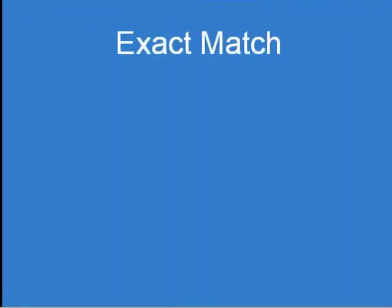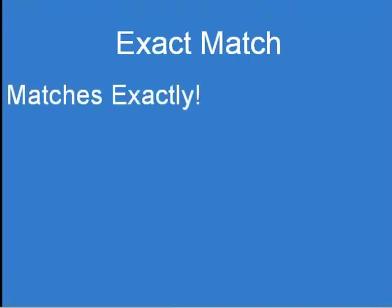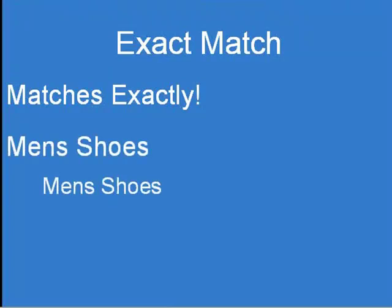Let's talk about exact match first. Exact matching means that your ad will only display if the keyword typed into Google matches exactly one of your keywords — no other words included in the search phrase, a perfect one-to-one match. So if we take the example of 'men's shoes,' only 'men's shoes' is going to trigger the ad. To set a keyword as exact when typing it in, you put square brackets around it.